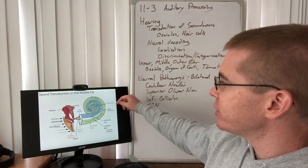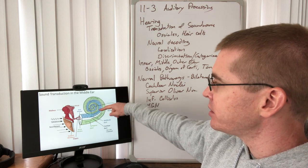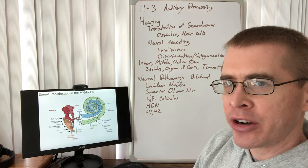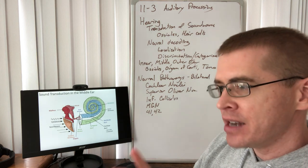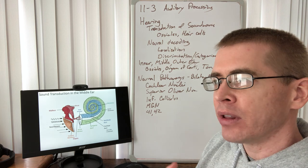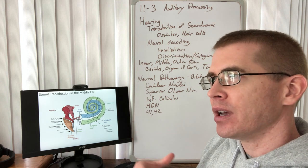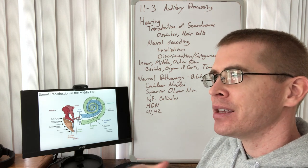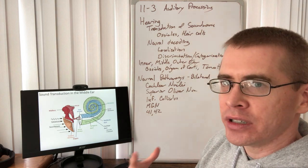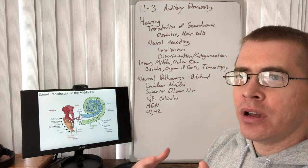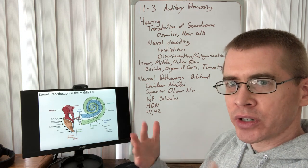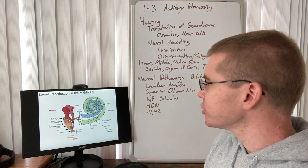Between the vestibular and the tympanic duct is the cochlear duct. The cochlear duct is where the hair cells are located, and it is filled with endolymph — a high electrolytic ion-concentrated fluid for the purpose of facilitating the depolarization of these structures.